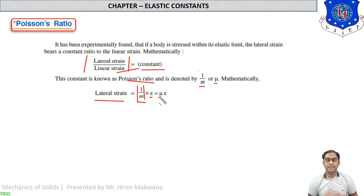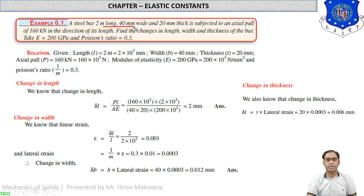These are the three fundamental topics: lateral strain, linear strain, and Poisson's ratio. Example 6.1: a steel bar 2 meters long, 40 mm wide, and 20 mm thick — so length equals 2000 mm, width equals 40 mm, thickness equals 20 mm. It is a rectangular bar subjected to an axial pull.